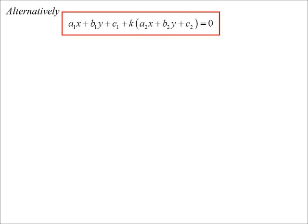then it must satisfy both equations. So if I substitute the point into the first equation in general form, it must come up with the answer 0. And if I substitute it into the second equation, it must come up with 0. So therefore it's true that if I added the two lines together, they must equal 0.